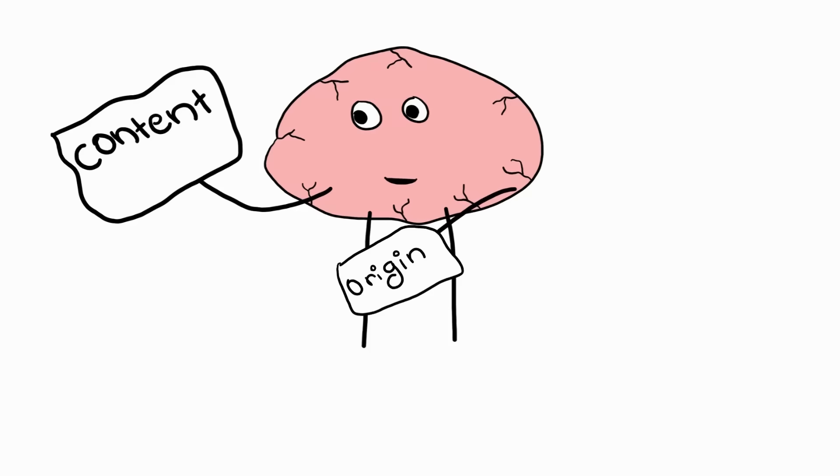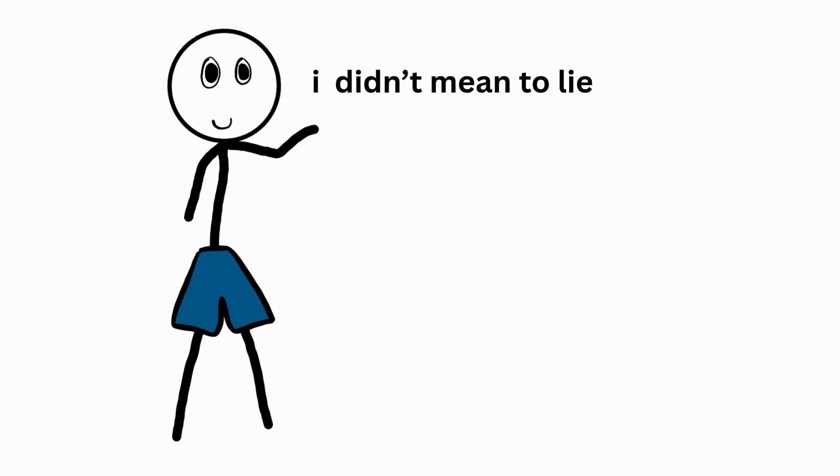This is what's known as source amnesia. A phenomenon where you recall something but can't remember where it came from. Essentially, your brain keeps the content but misplaces the origin tag. This memory glitch can sometimes make you repeat false or uninformed opinions confidently as facts all without being consciously dishonest.